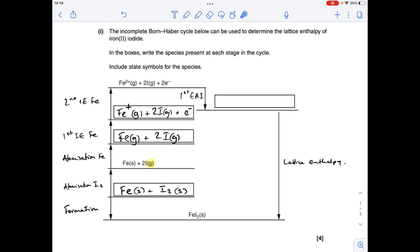And then this stage here, we've got to ionise those two iodine atoms in the gas state. So that's the first electron affinity of the iodine, which means we've got these species in this box here.